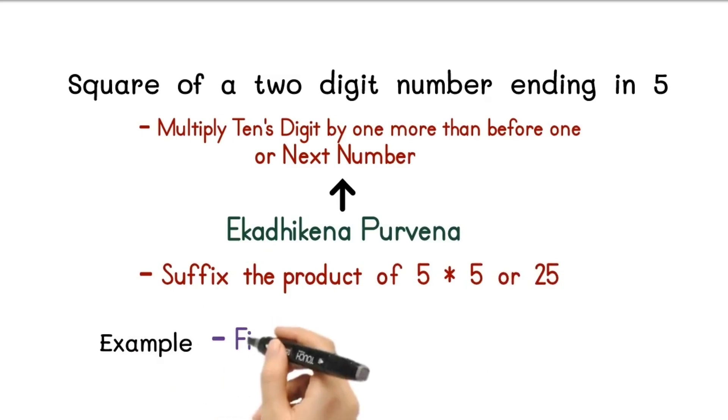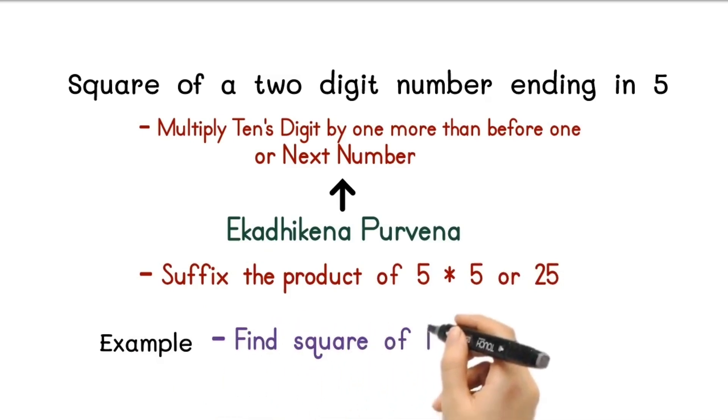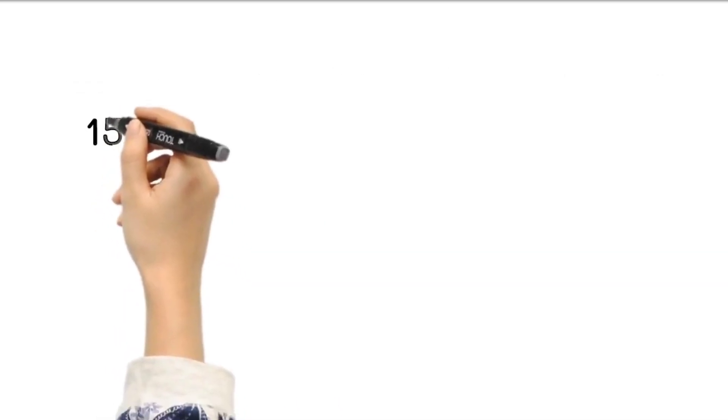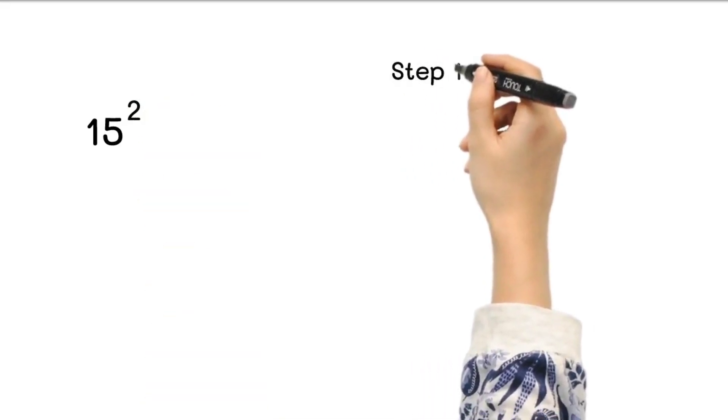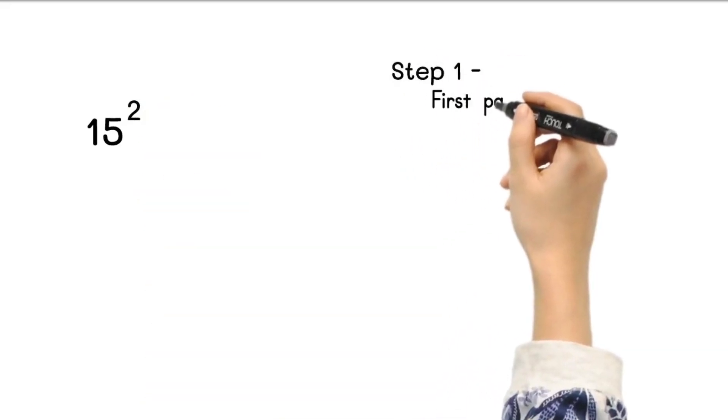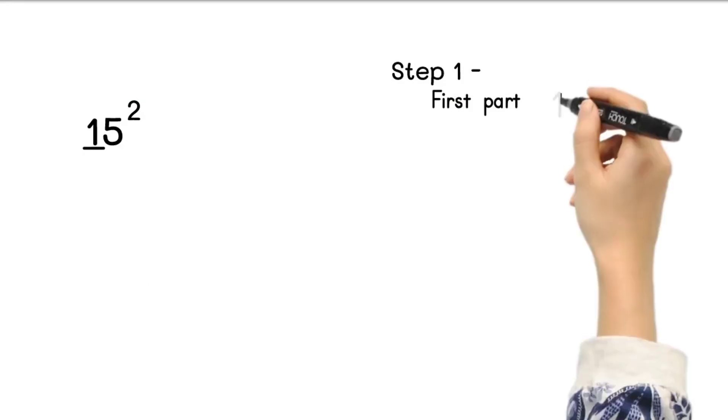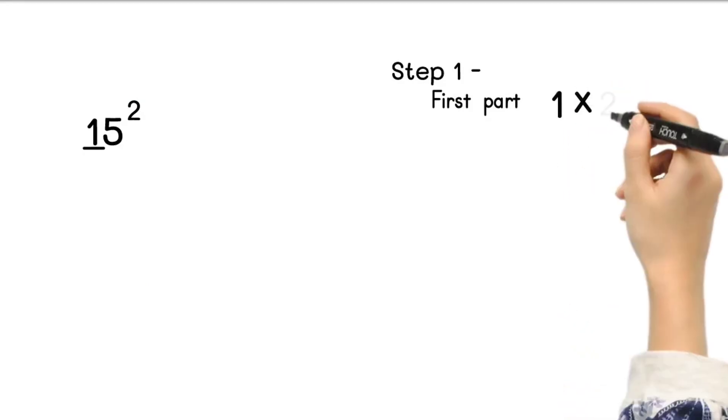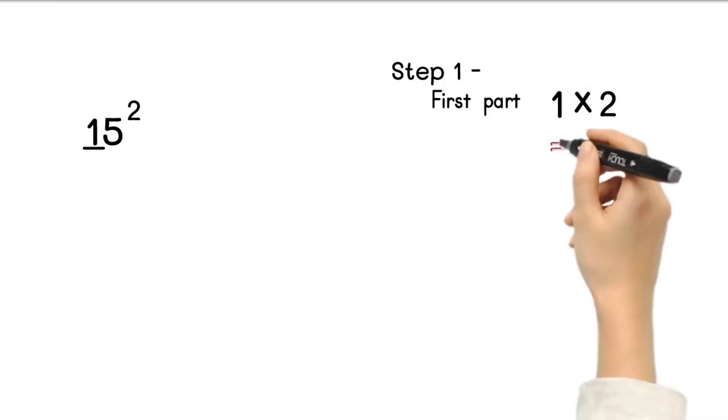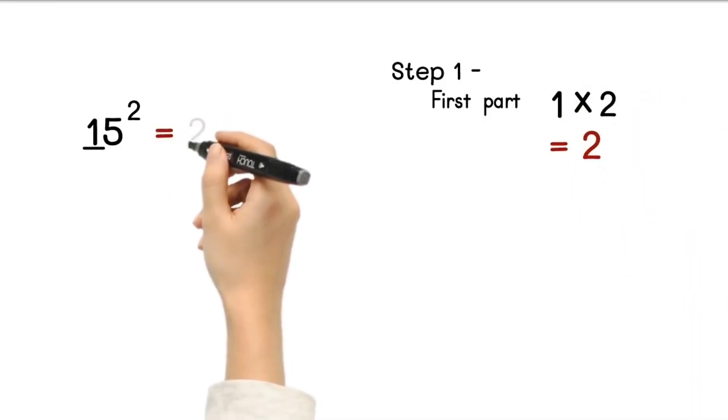For example, let us find out square of 15. To find out the square of 15, we need to follow two steps here. Step 1: to get the first part, multiply the tens digit 1 by the next higher number which is 2. So 1 multiplied by 2 equals 2. So this is our first part.